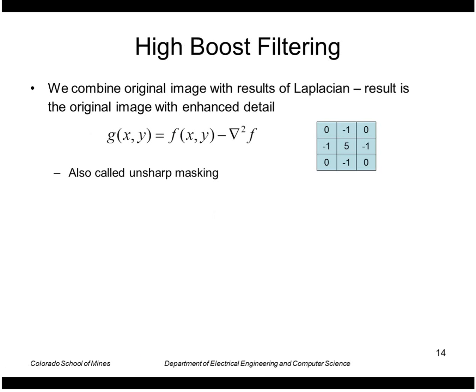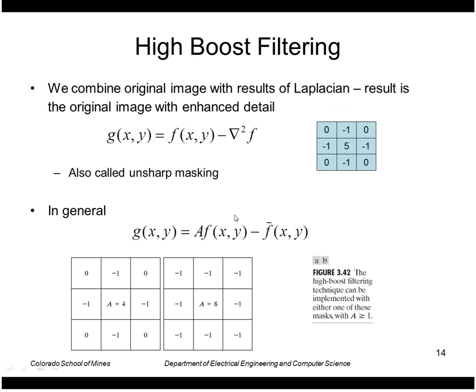One application of the second derivative is to do what they call high boost filtering. Taking the original image minus the Laplacian effectively gives me this mask here. In general that's equivalent to taking the original image and subtracting the average image. This technique is called unsharp masking because it originated in photographic techniques before computers where they would sharpen photographs by combining a negative with a blurry version of the photograph.